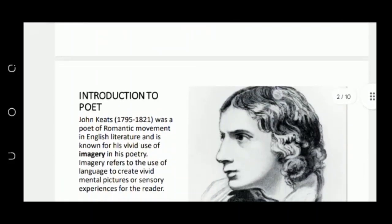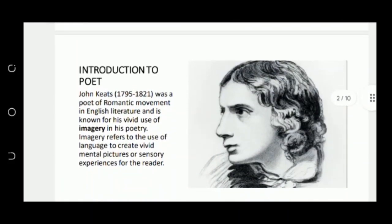We have an introduction to the poet. John Keats was born in 1795 and died in 1821. He is a poet from the Romantic movement in English literature. He was basically a second generation poet, along with P.B. Shelley and Lord Byron, of the younger generation.